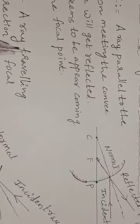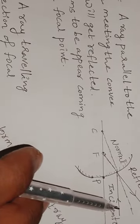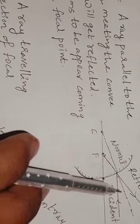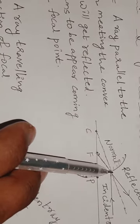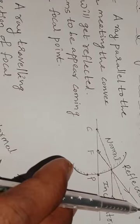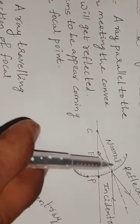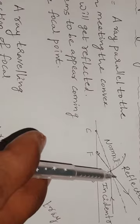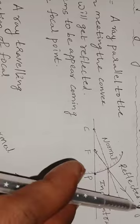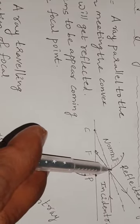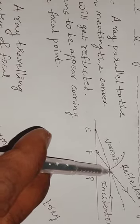So the first rule states: when the incident ray moves parallel to the principal axis and strikes the convex surface, the reflected ray goes in a direction but it seems to be coming from the focal point. The reflected ray is actually moving away from the surface, but it appears to come from the focal point.